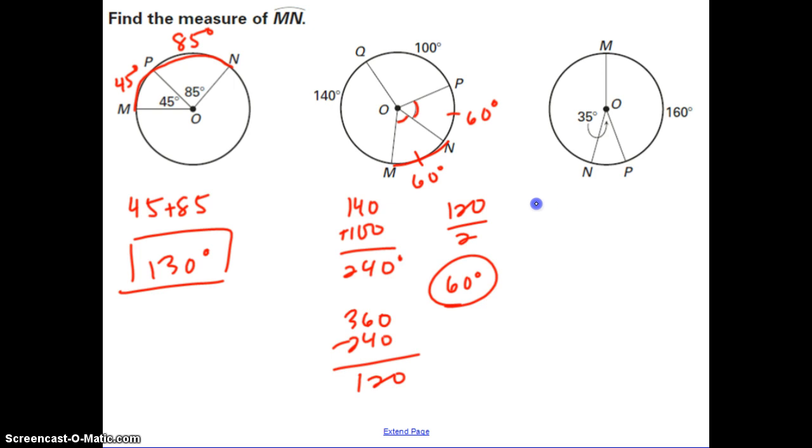I want you to go ahead and pause and try this last one and then check back with me. Hopefully you've found that arc MN is 165 degrees. Now don't be fooled. Remember, you can't use the picture for what it looks like. So don't think that NP and MN look like they're the same length so they're both 160. You have to make sure you do the math. So check your work with mine if you didn't get 165 and see where you might have made a mistake.